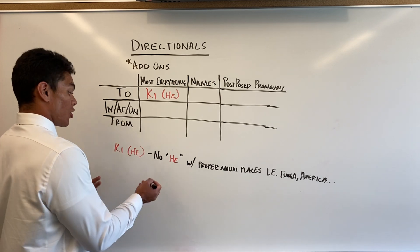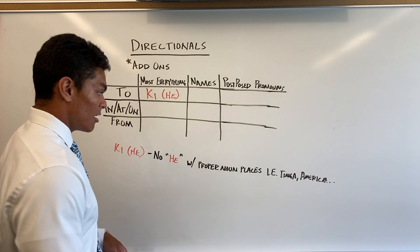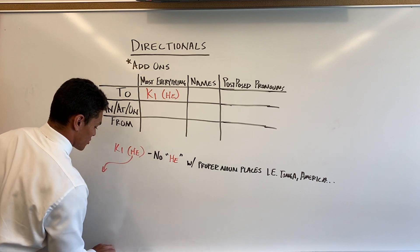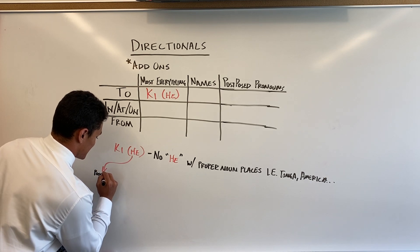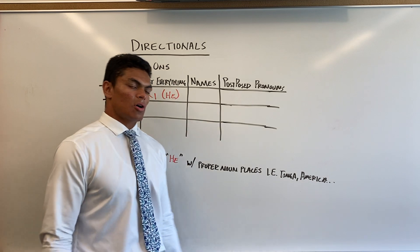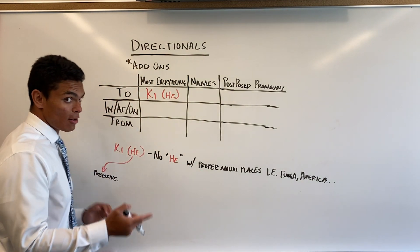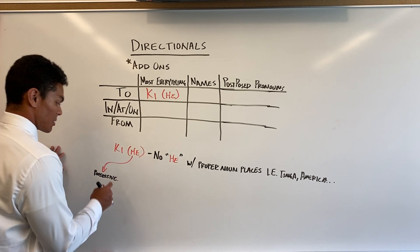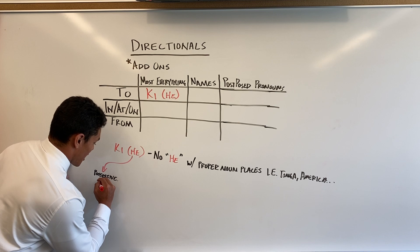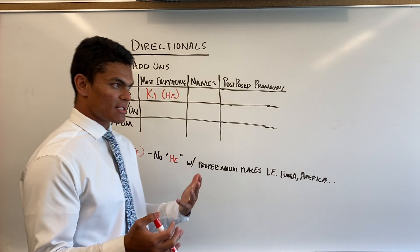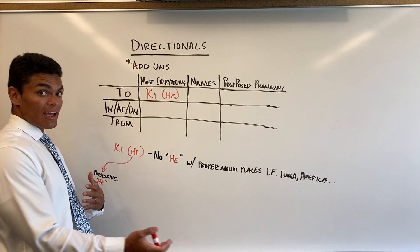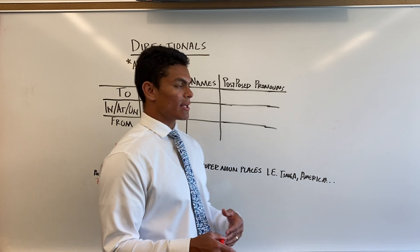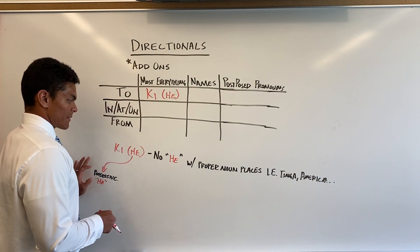If you need to say 'I'm going to my house,' you'd say 'ko alu ki ho'aku api' — you can switch 'he' with a possessive, just like we learned. So we can say hoku, eku, ho'o, ho, whatever we want — we can switch that with a possessive. 'I'm going to your house' — 'ko alu ki ho api.' Or we can switch it with 'ha,' which kind of emphasizes the singularity of something. 'I'm going to a funeral' — 'ko alu ki ha putu.' 'I'm going to a wedding' — 'ko alu ki ha mali.' So that's ki-he and its variations.